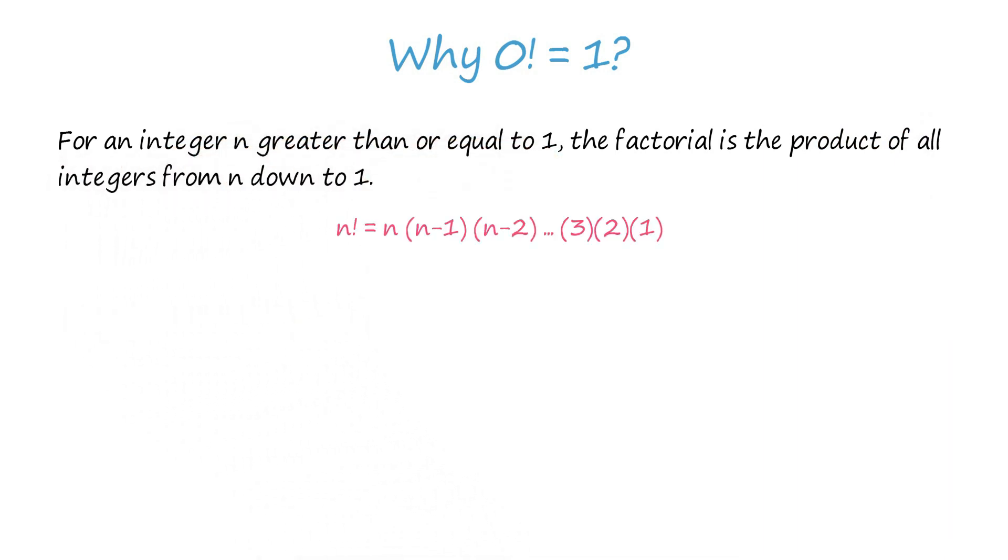That is, for any natural number n, n factorial equals n times n minus 1, times n minus 2, and so on up to 1.